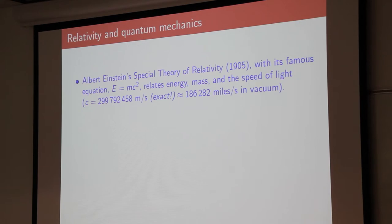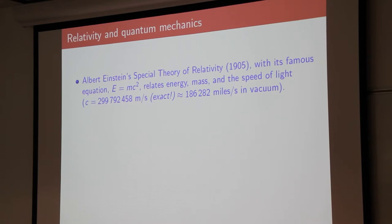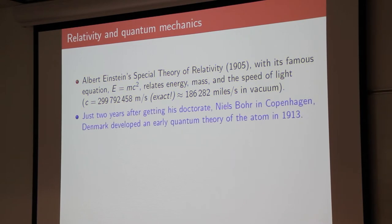1905 was the year special relativity was introduced, with the one equation virtually everybody on the planet has heard of: E equals mc squared. It's a relation between energy, mass, and the speed of light. The speed of light has been in the news this past week with the experiment at CERN where they think they have neutrinos traveling faster than light. Most physicists don't believe this and think the experiment is probably wrong. But the important thing is that c squared is a very big number, so even a small mass produces a tremendous amount of energy.